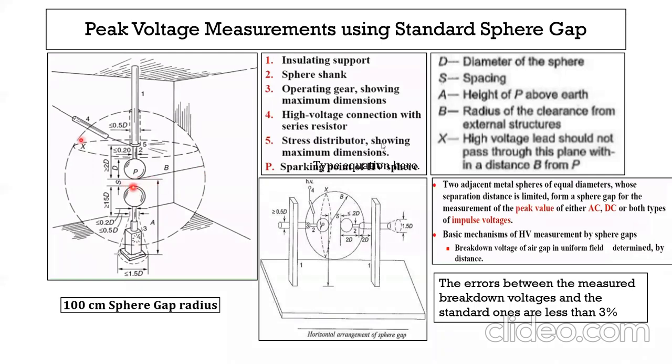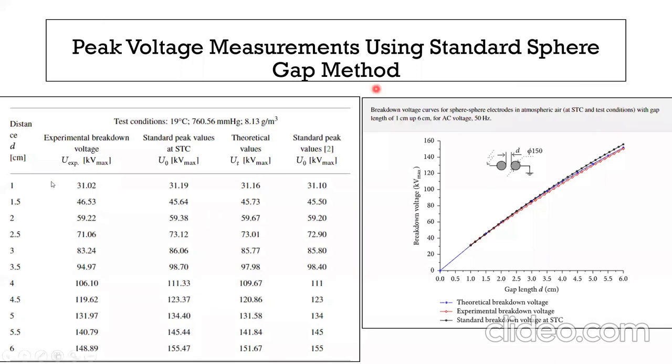What is important here is one upper sphere is a fixed one and the lower sphere is movable. You can push this lower sphere upward and downward so that you can change the spacing. Basic mechanism of high voltage measurement is by sphere gap. Breakdown voltage of air gap in uniform field is determined by the distance. So distance versus voltage, a table is prepared.